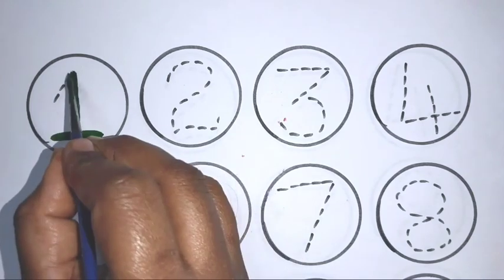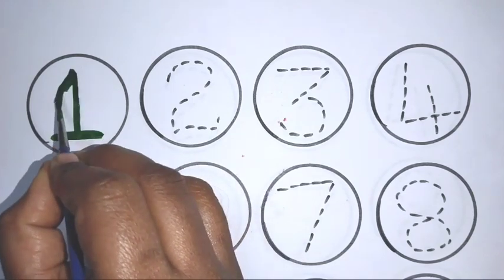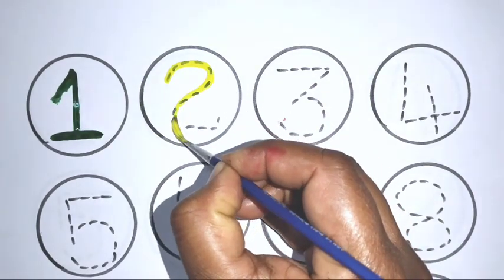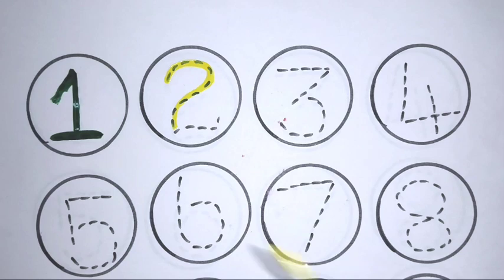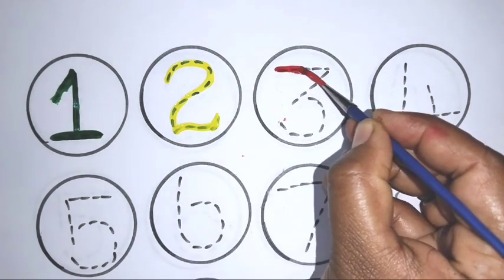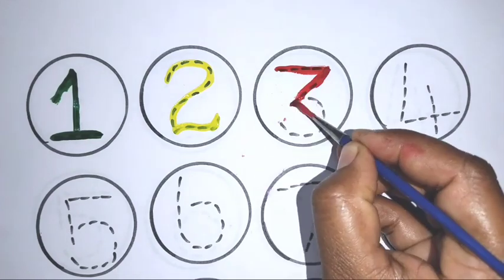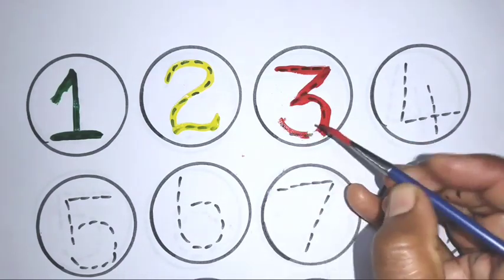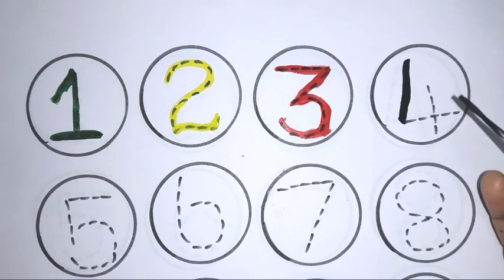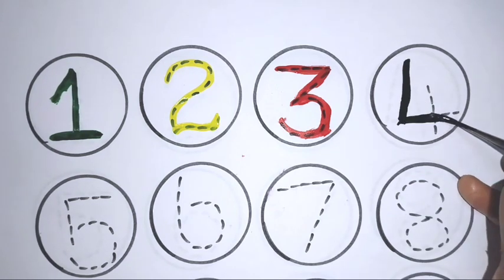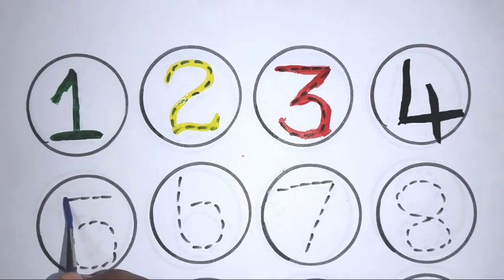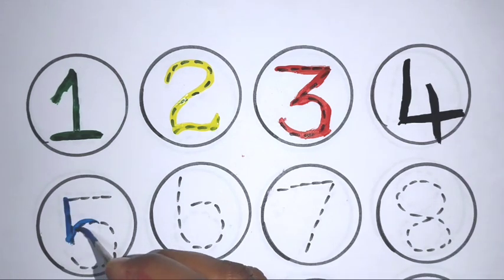First green color, one. Second is yellow color, two. Next red color, three. Next black color, four. Next blue color, five.